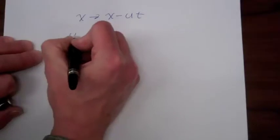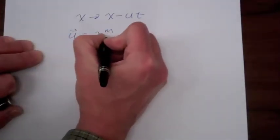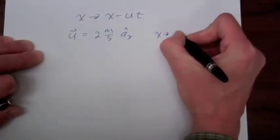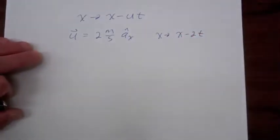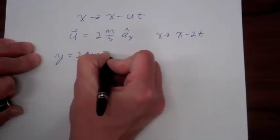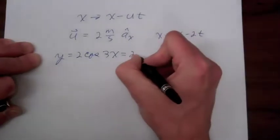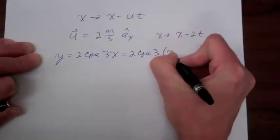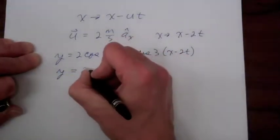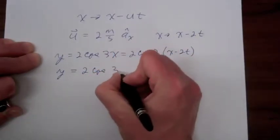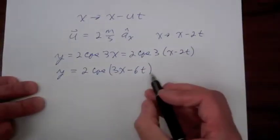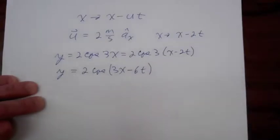Let's say we want the velocity to be 2 meters per second in the x direction. So for x we're going to substitute x minus 2t. Our original function was y = 2cos(3x), so substituting gives us y = 2cos(3x - 6t), which represents a wave propagating in the plus x direction with a velocity of 2 meters per second.